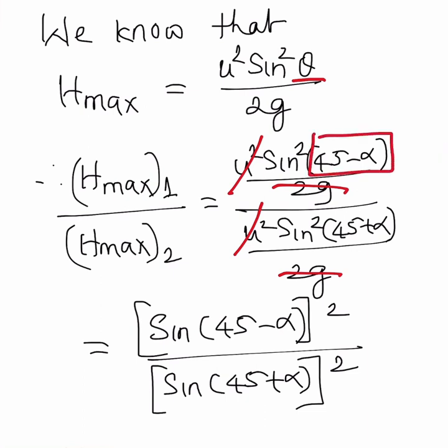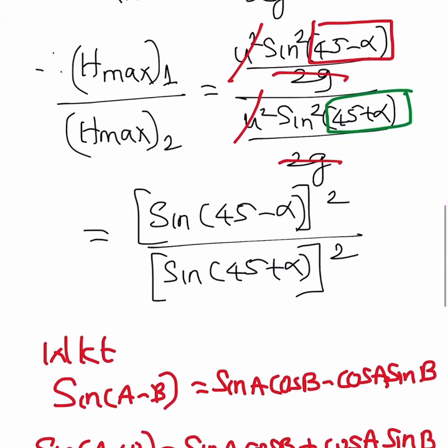For the second projectile, in place of theta we are substituting 45 plus alpha. Here u square will get cancelled, 2g will get cancelled, and the remaining is sine 45 minus alpha whole square divided by sine 45 plus alpha whole square.